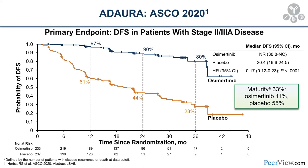The ADAURA trial, just presented at ASCO, further cements this idea — these patients have other options. Adjuvant osimertinib was given to patients with stage 2 and 3A disease, and even stage 1B patients after resection, showing a remarkable difference in disease-free survival. A hazard ratio of 0.17 for patients with stage 2 and 3A EGFR-mutated lung cancer is hard to ignore — with 90% disease-free survival at two years. The field will increasingly move toward targeted therapy for patients with actionable mutations.